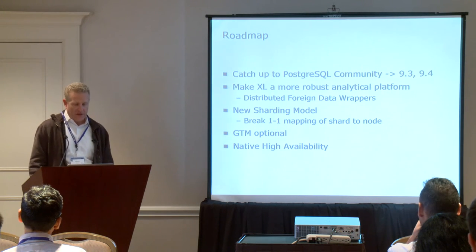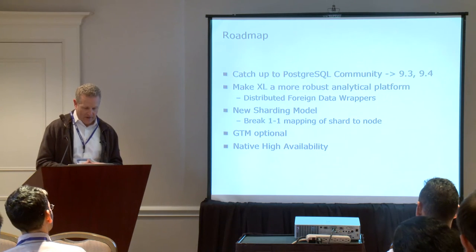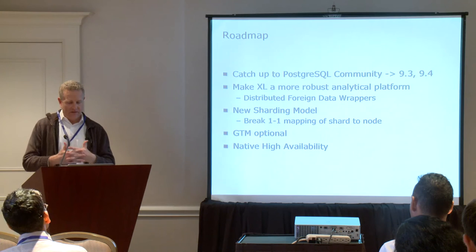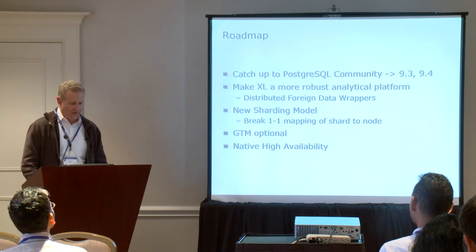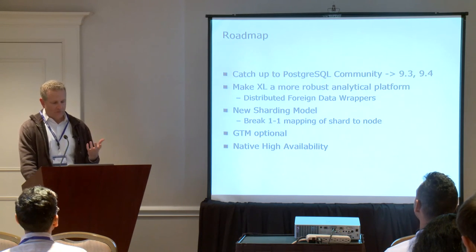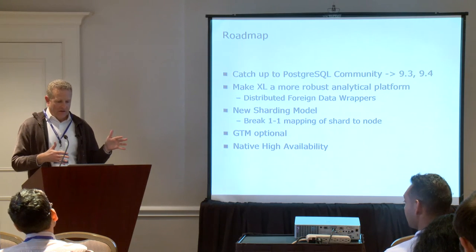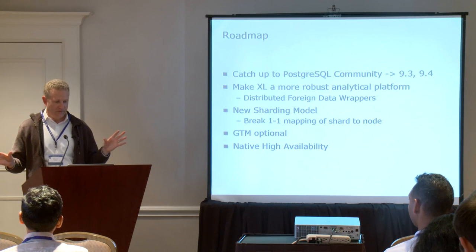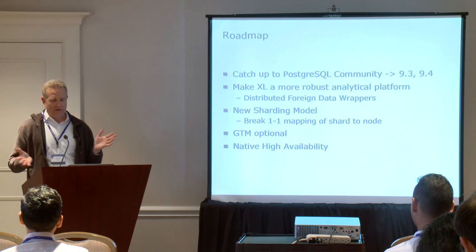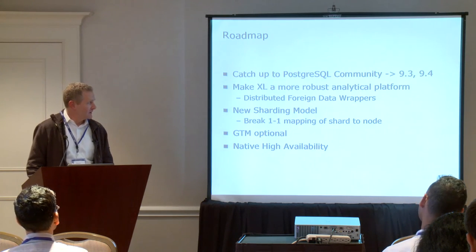On the roadmap, we're still on a 9.2 base, and we have to get caught up. We want to catch up to the Postgres community, and 2ndQuadrant has expressed their intent to support this effort. We'd also like to make XL a more robust analytical platform. Postgres has foreign data wrappers and we think we should be able to leverage distributed foreign data wrappers — so the individual data nodes could pull in external data in parallel, whether from a sharded data source or a set of Hadoop files in HDFS.